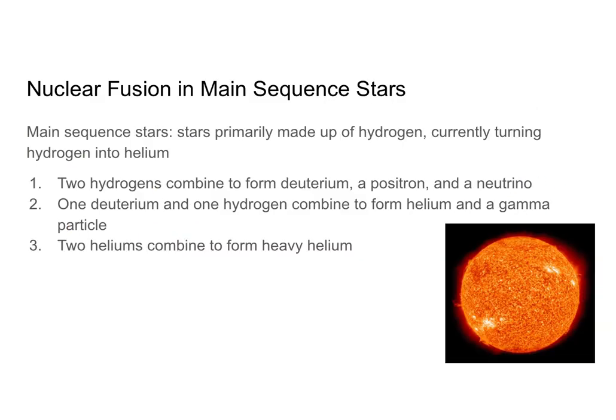So let's go ahead and talk about nuclear fusion and main sequence stars. We actually define main sequence stars as stars that are primarily made up of hydrogen. And so they are stars that are currently undergoing the fusion reaction that we talked about on the previous slide. So they're turning hydrogen into helium. Now in the previous slide we talked about how two hydrogens combine to form deuterium, a positron, and a neutrino. Hopefully you guys identified that correctly as beta-plus decay. And then we have a deuterium and a hydrogen combining to form helium in a gamma particle. And again, I hope you all properly identified that as gamma decay. And then finally we have two heliums combining to form heavy helium. And again, this is a self-sustaining nuclear reaction until all of the hydrogen has turned into helium.